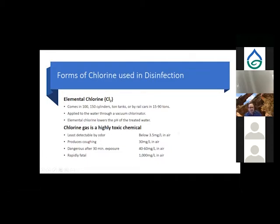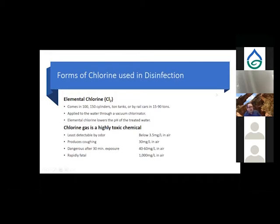Chlorine gas is a highly toxic chemical — you can detect it at only 3.5 parts per million in the air. In a million-gallon empty tank, 3.5 gallons of chlorine would be detectable by smell; at 30 gallons you'll cough; at 40 to 60 gallons you're in danger of exposure after 30 minutes; and at 1,000 gallons in that space it becomes rapidly fatal. Chlorine gas has extensive regulatory requirements just to possess and use it.